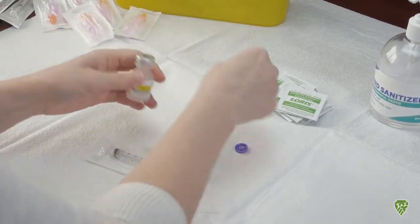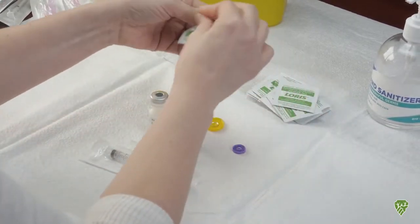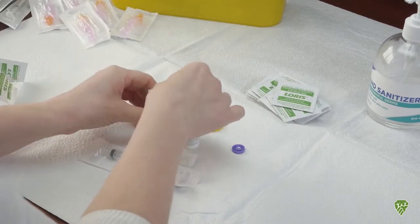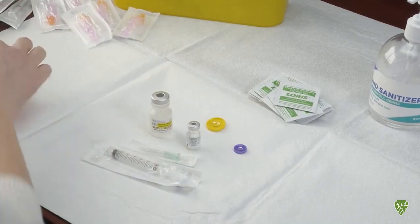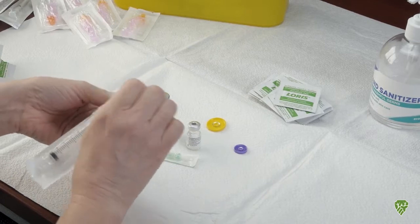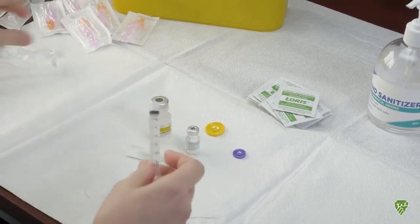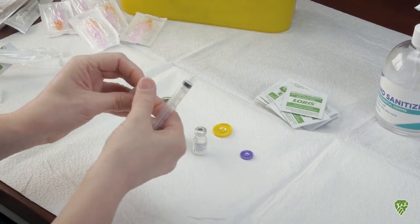And then doing the same thing for the vial of diluent with a new alcohol swab. Now I want to let those vials dry of alcohol and I'll prepare my syringe for the dilution.